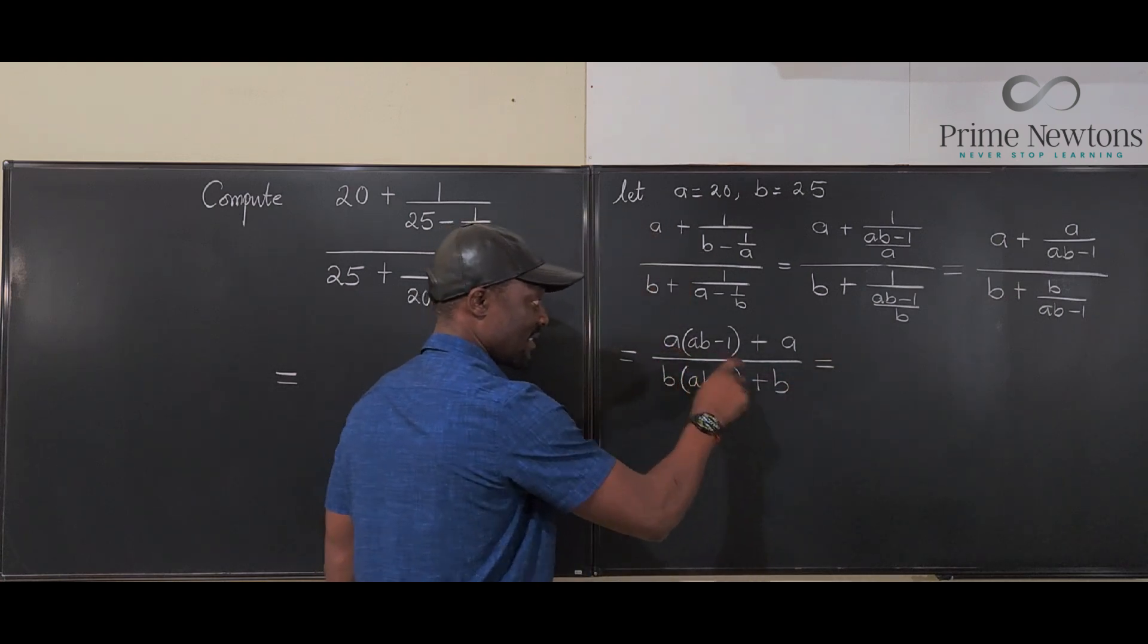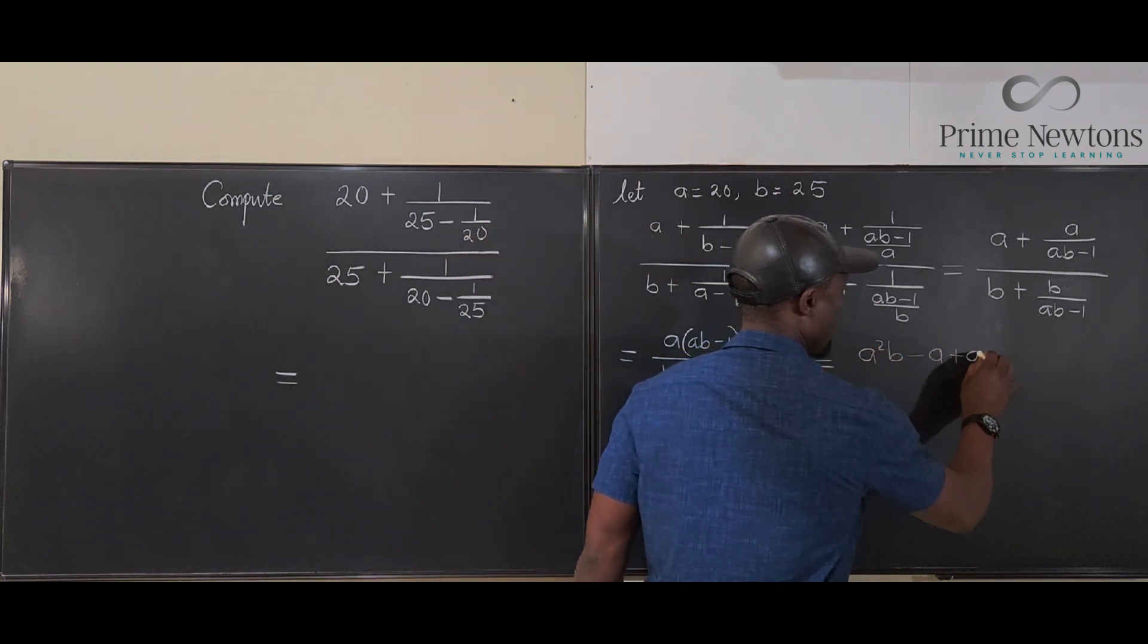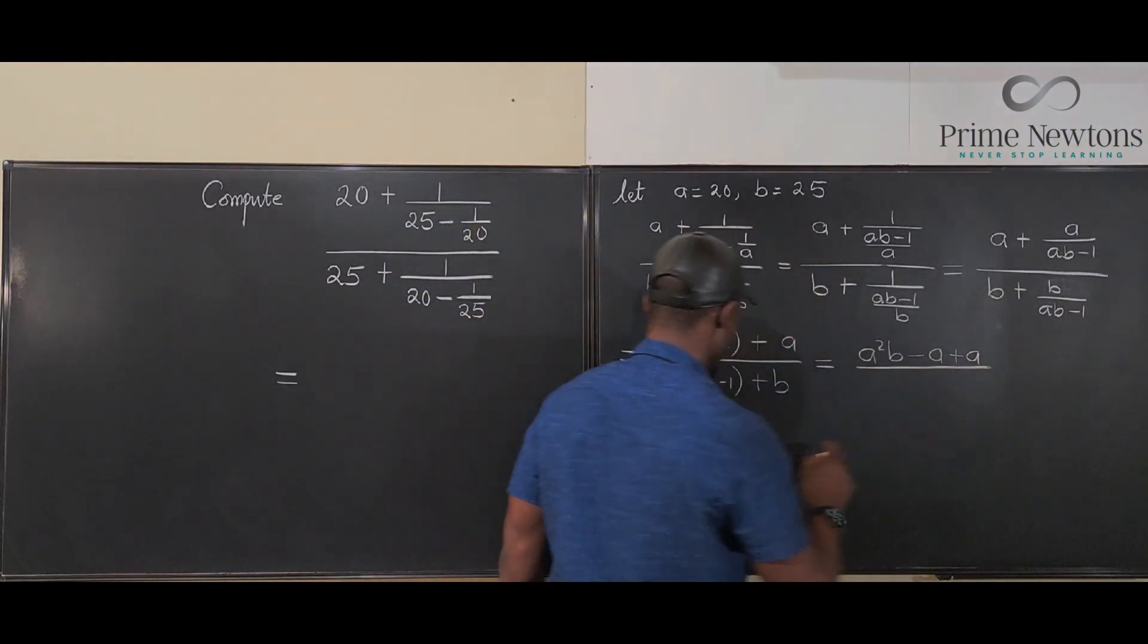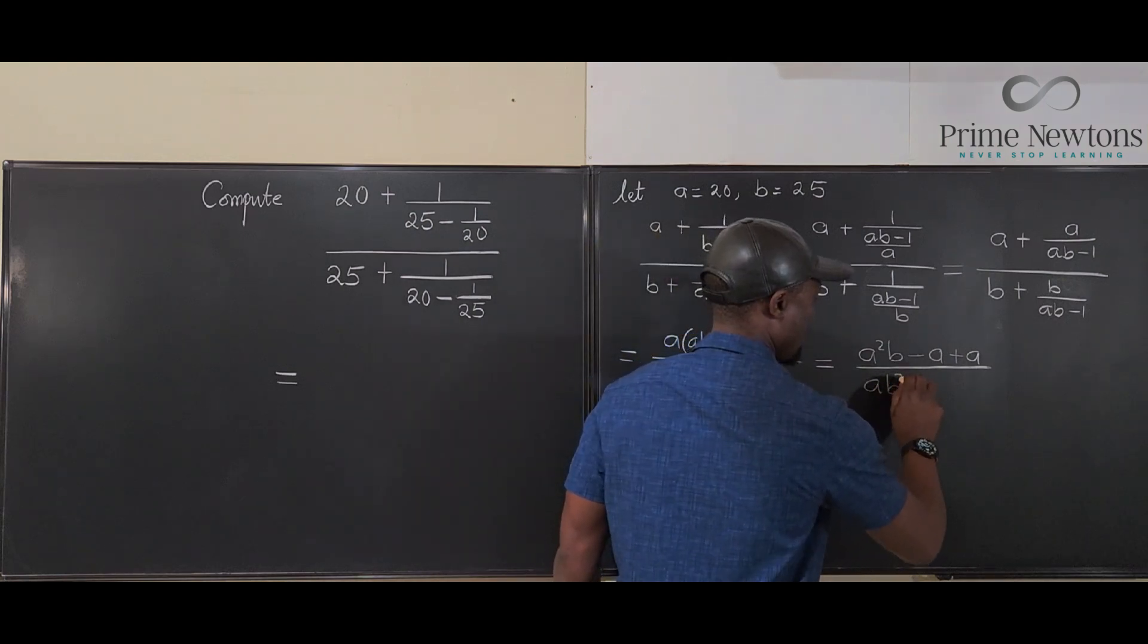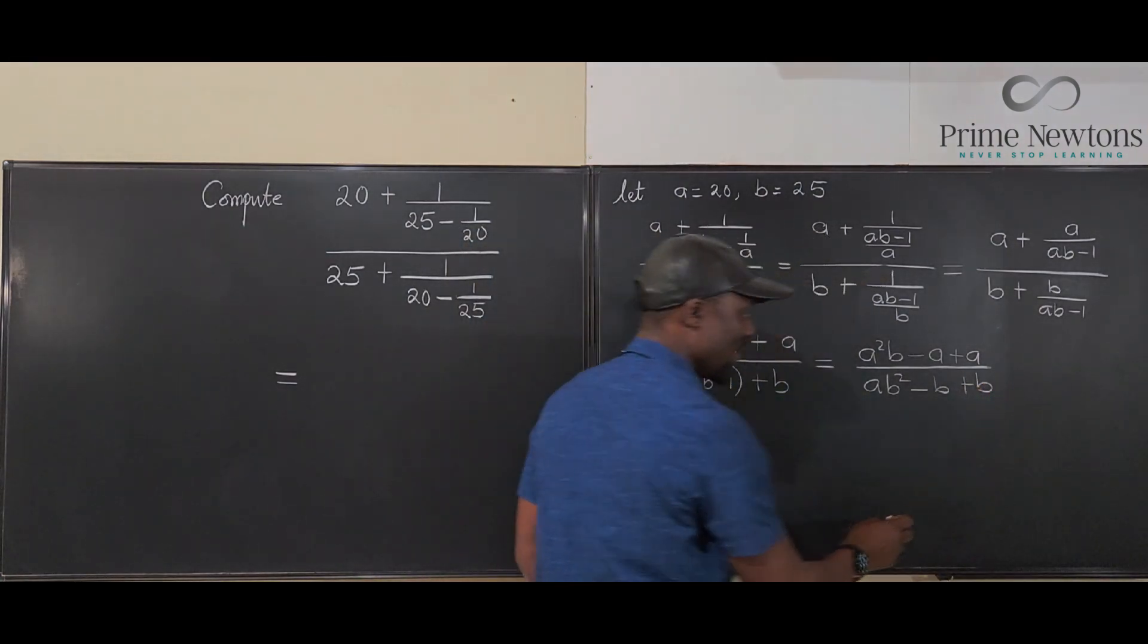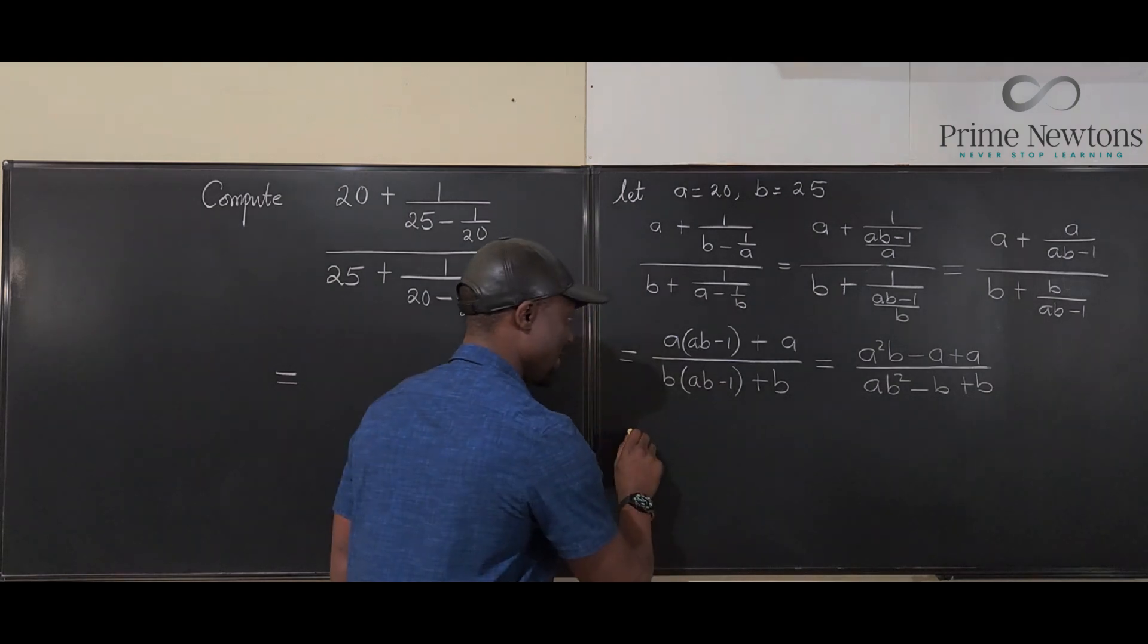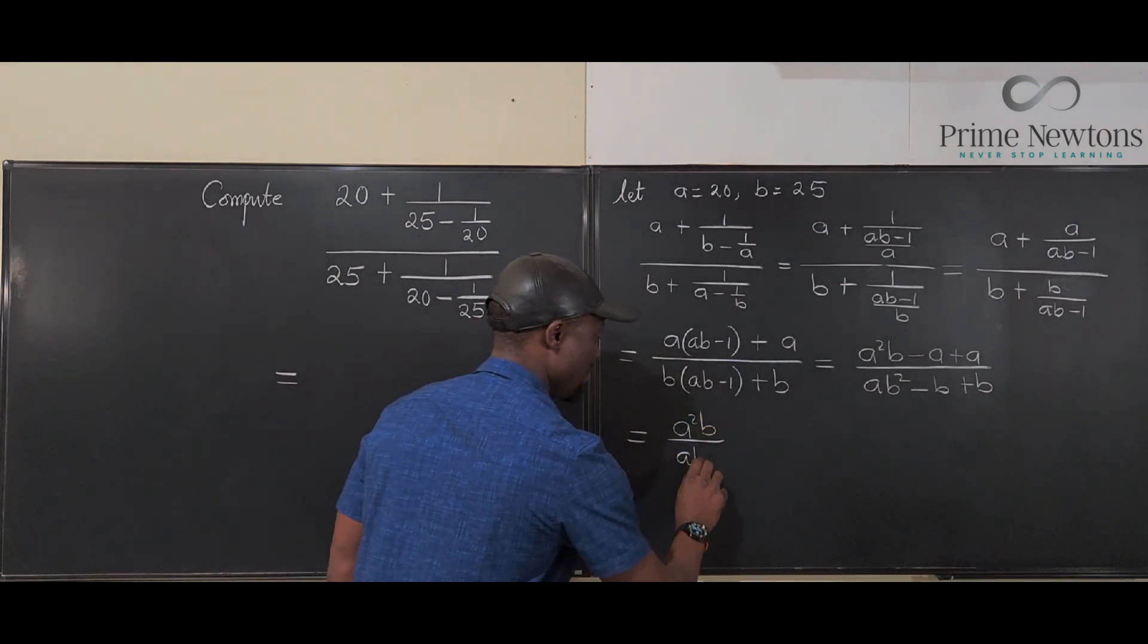If we expand this, we're going to get A squared B minus A plus A. If we expand the bottom, it's going to be AB squared minus B plus B. Notice that these two cancel out and these two cancel out. So what you have left is just A squared B over AB squared.